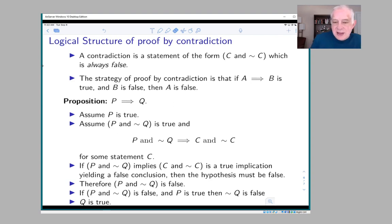And that comes from the truth table for implication. It's similar to the contrapositive argument where the only way that an implication can be true with a false conclusion is if the hypothesis is false.